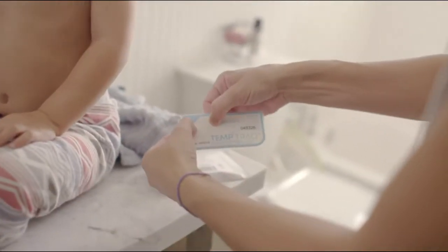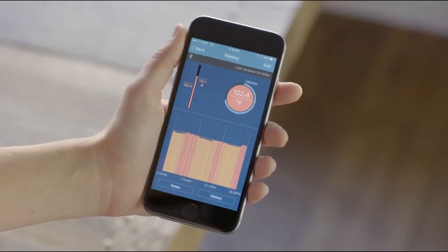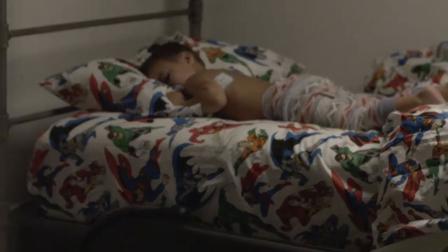TempTrack is a comfortable patch that goes under the arm that sends a continuous temperature reading to an app on your phone. So when your child comes down with a fever, you don't have to wake him up to take his temperature.